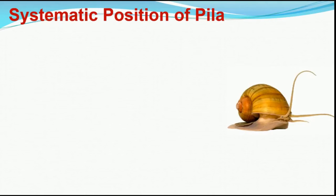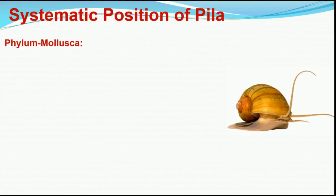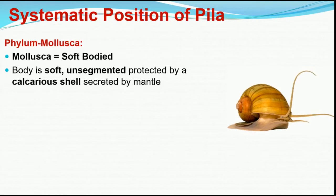Now we will see the reasons for the classification of Pila globosa. First, it is included in Phylum Mollusca because it shows a soft body — it is a soft-bodied animal. The body is unsegmented and is protected by a calcareous shell which is secreted by the mantle. All animals which are soft-bodied, unsegmented, and have a calcareous shell must be included in Phylum Mollusca.